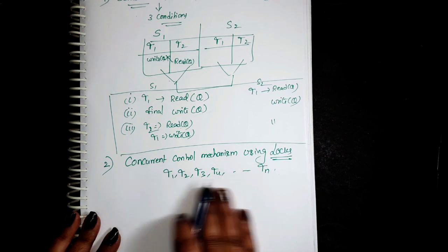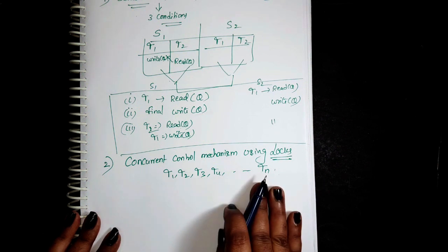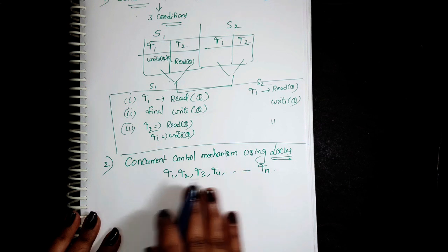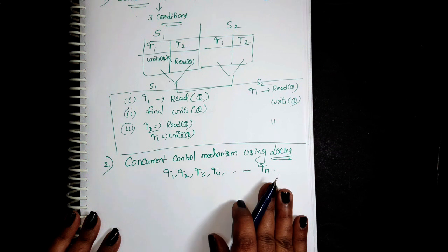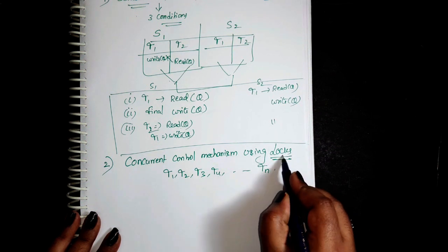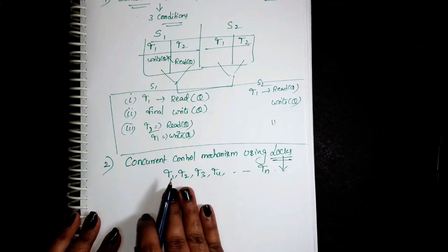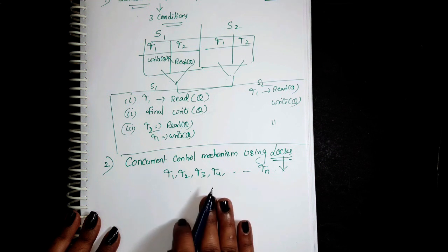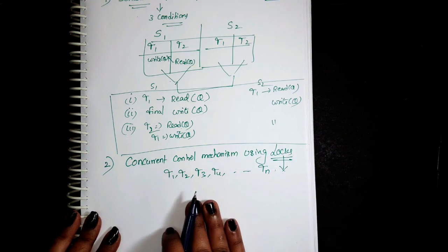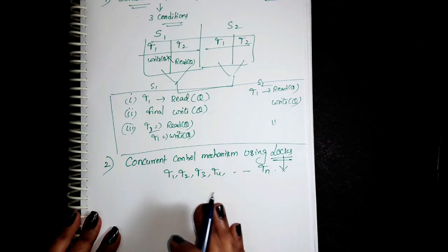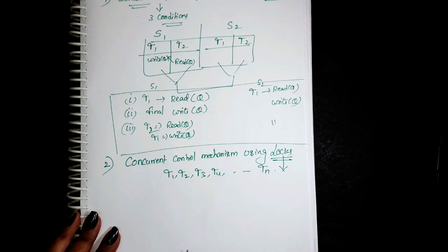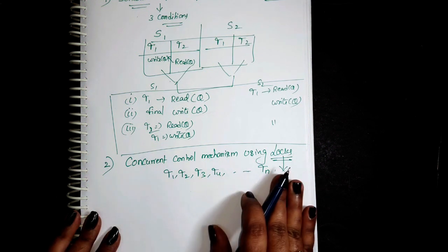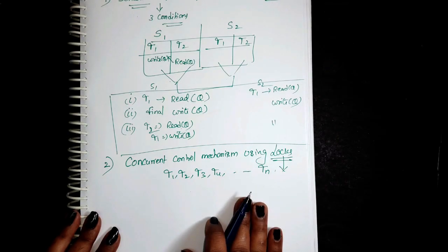In order to execute all those transactions perfectly, without any conflicts, errors, or incorrect problems, we impose a locking mechanism. This is similar to receiving a phone call — when you are on one call, if someone else calls the same number, the system locks that line and you cannot access another call simultaneously. Similarly, a lock is placed on a particular transaction in the database system.